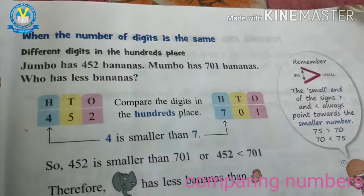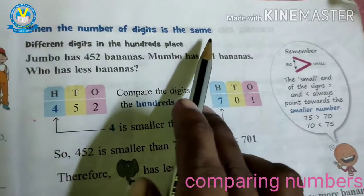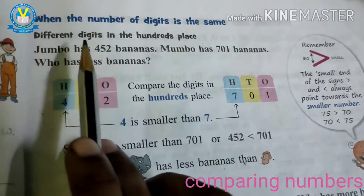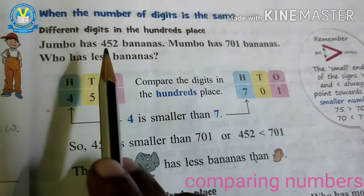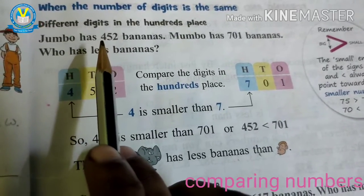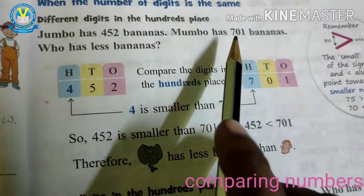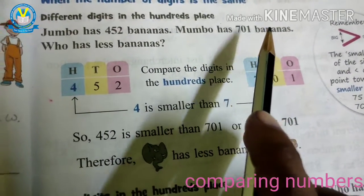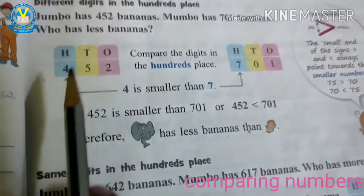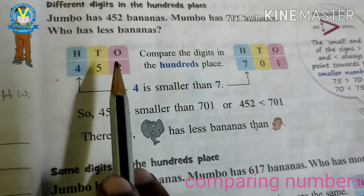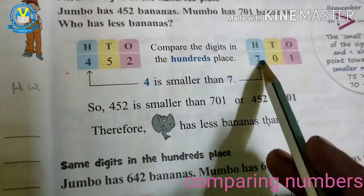Let's see one more example — when the number of digits is the same, but there are different digits in the hundreds place. Jambu has 452 bananas. Mambu has 701 bananas. Who has fewer bananas? Let's see. Here, 452 is a three-digit number and 701 is also a three-digit number.